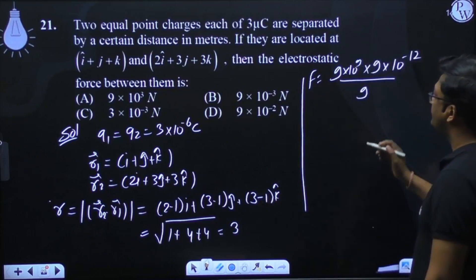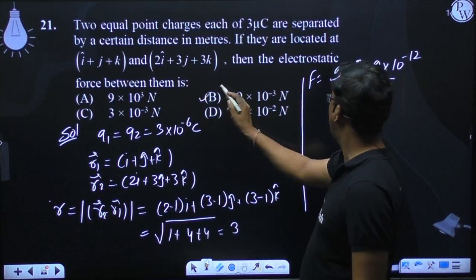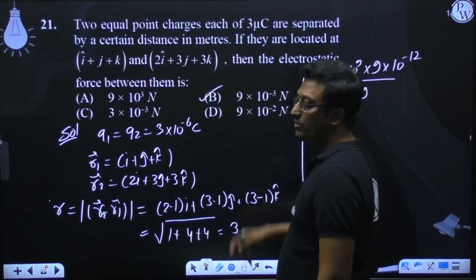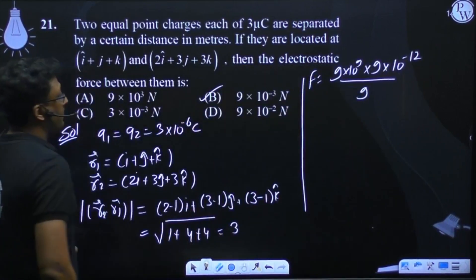3 ka square. So when you solve this, what we finally get is 3 into 10 to the power minus 3 Newton, option number B.